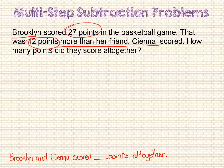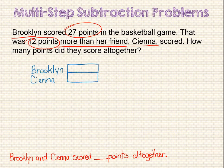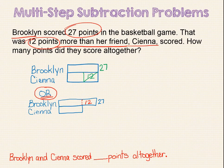When rereading the problem, we identify the important information we need to solve the problem. I can think of at least two different ways to model this problem. I could start both girls out with equal sized bars, indicate that Brooklyn scored 27 points, and then cross out 12 from Sienna's bar to represent the 12 points that Brooklyn scored more than her. I can also make Brooklyn's bar longer at the beginning and just indicate that the section extending beyond Sienna's bar represents 12 points. I think this second way may be a little easier to follow. There is not only one right way to model a problem, as long as you understand your model.